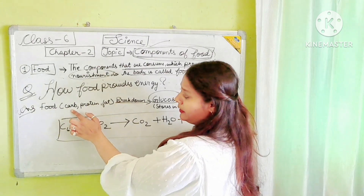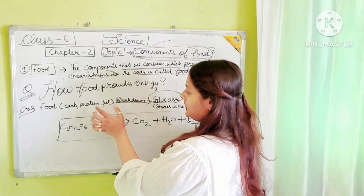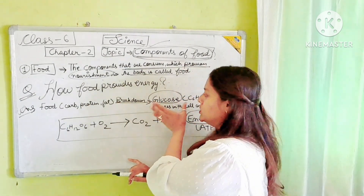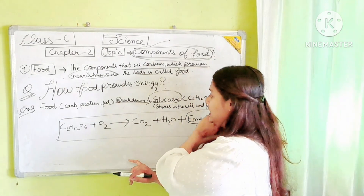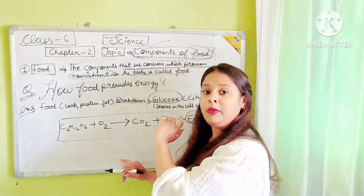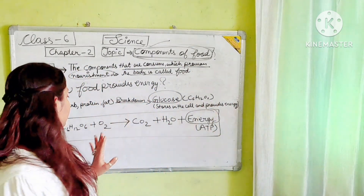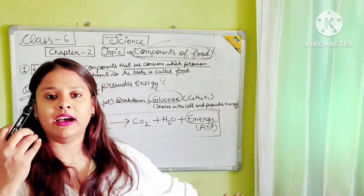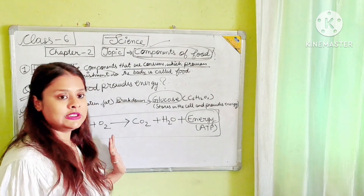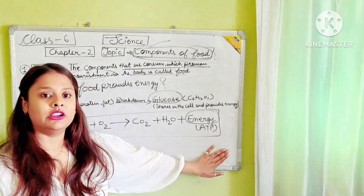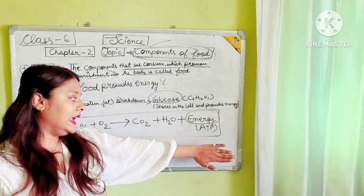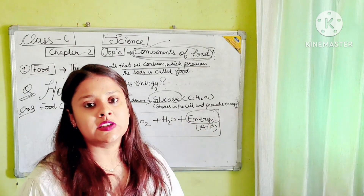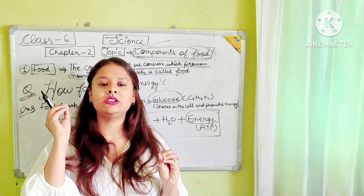You should know how food provides energy to our body. First, food intake — which may be carbohydrates, proteins, or fats — goes into our body and breaks down into smaller, simpler chemical compounds called glucose, with formula C6H12O6. This is stored in the cell. The chemical equation is: C6H12O6 + O2 → CO2 + H2O + energy. Energy comes in the form of ATP, which is the energy currency of the cell.